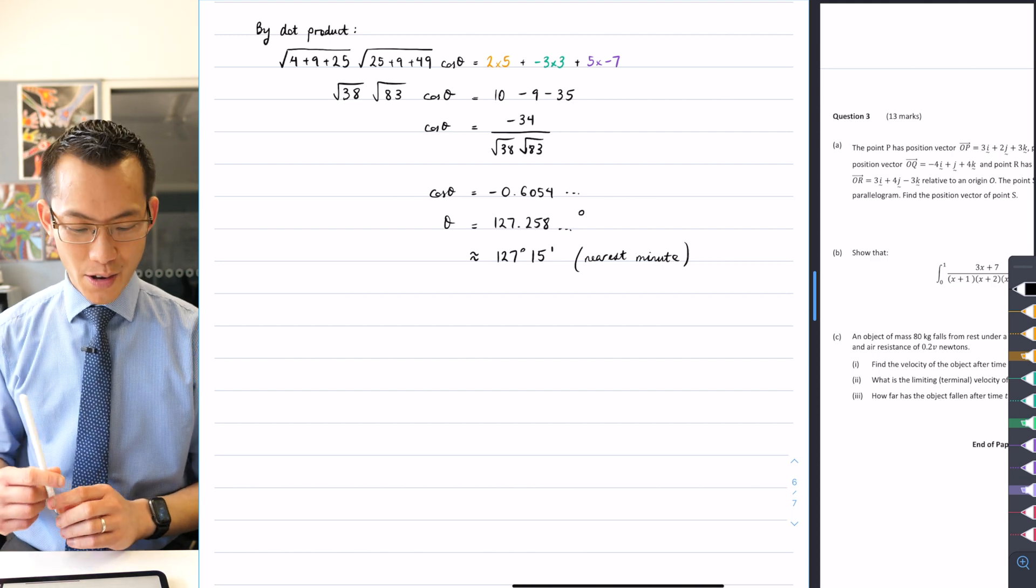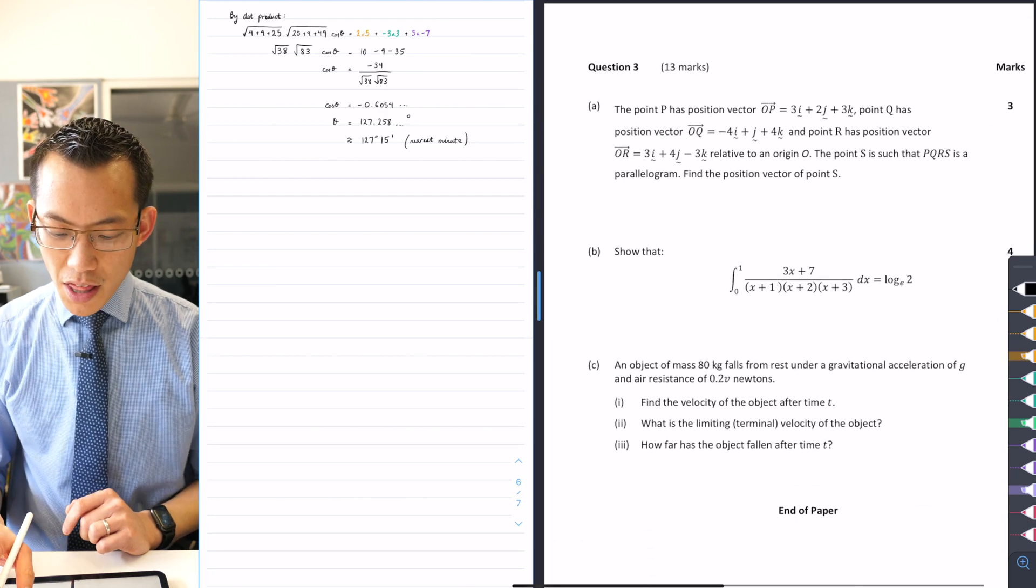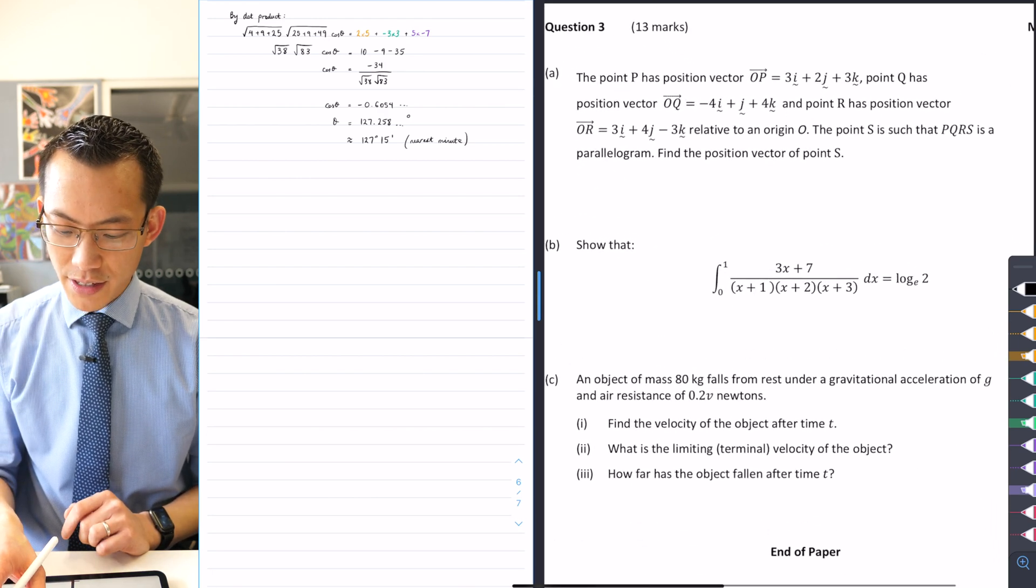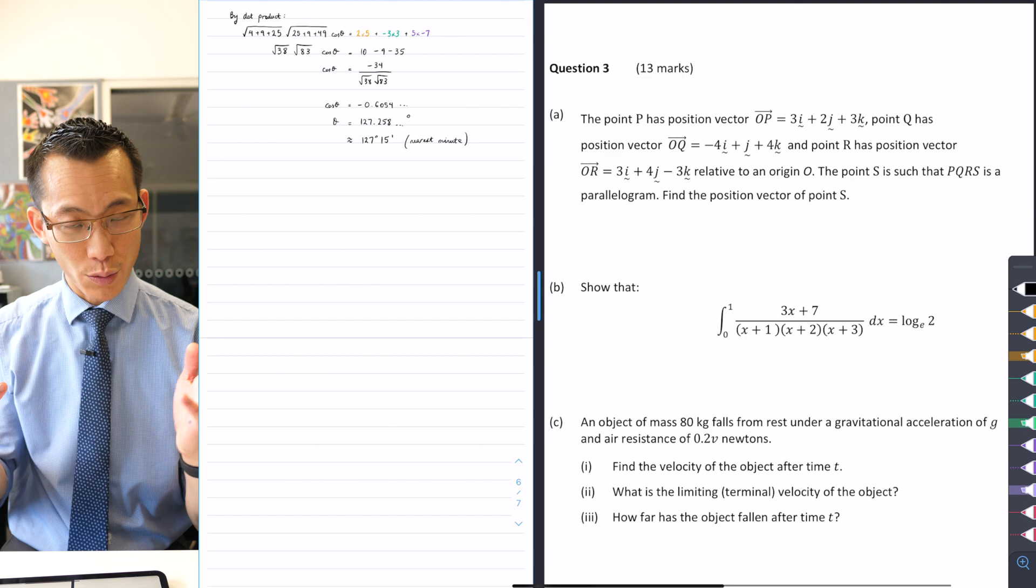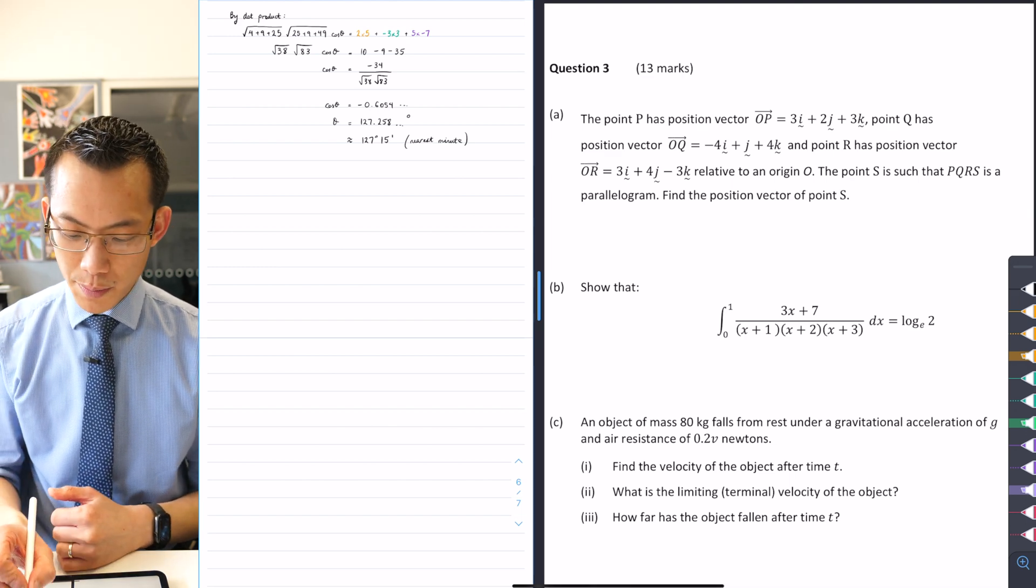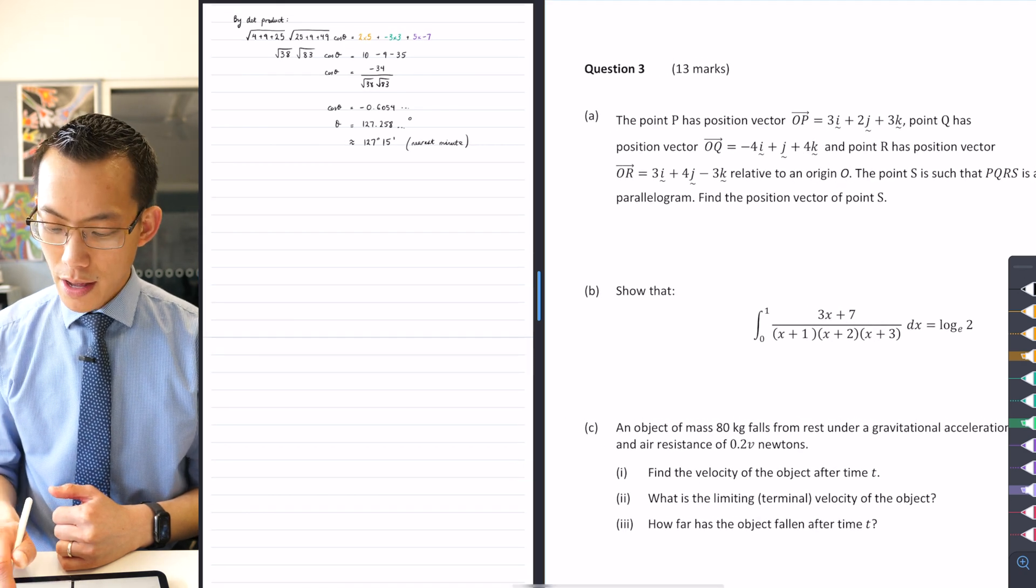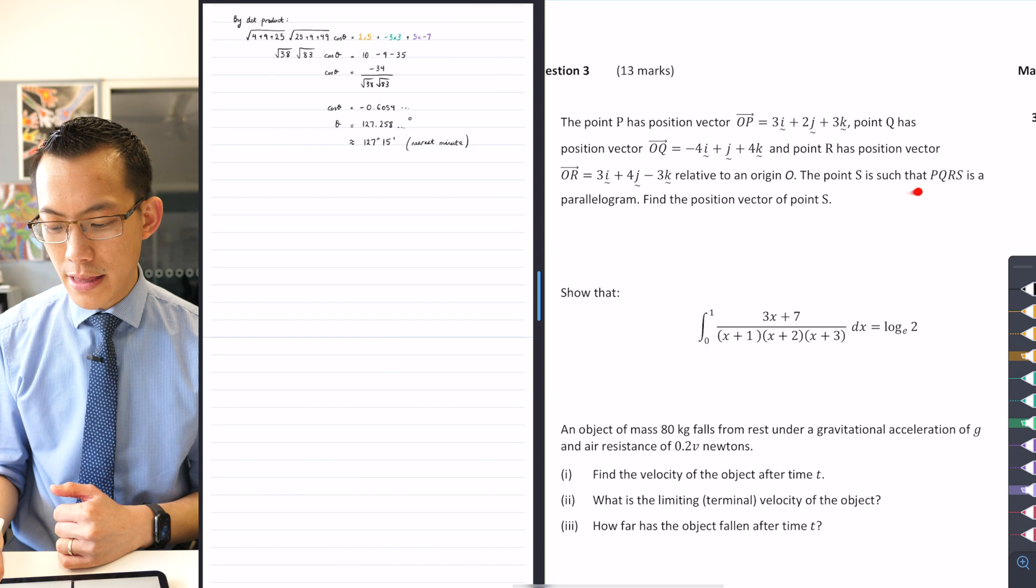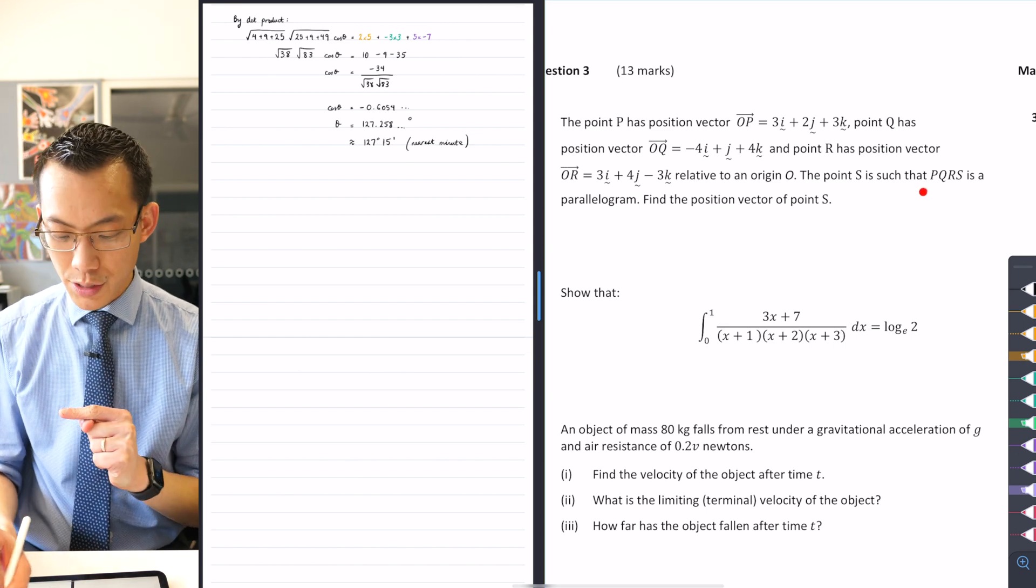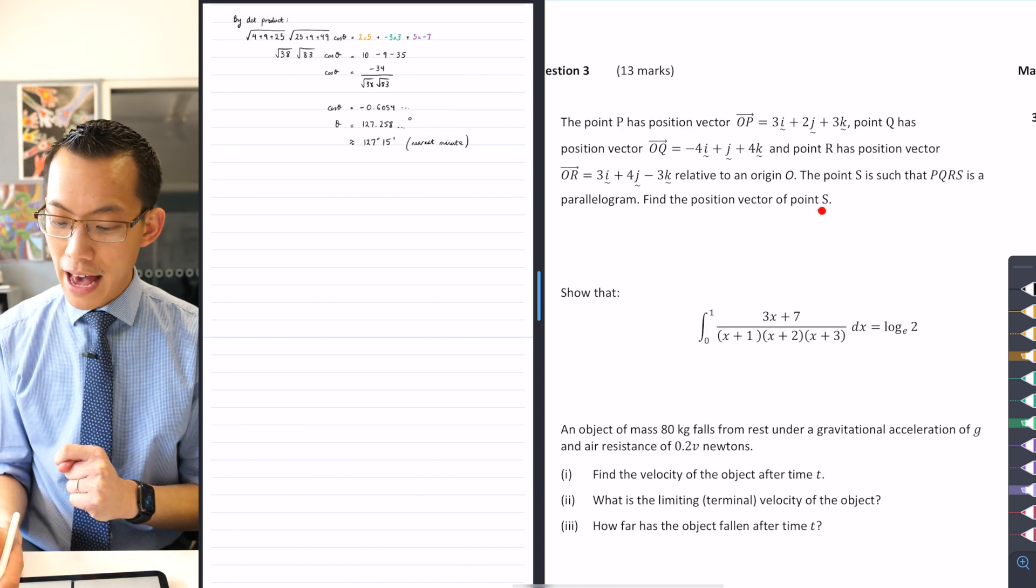Alright, we are on the home stretch, so here comes question three. The point P has position vector OP, point Q has its position vector, point R has its position vector relative to an origin O. Then they say there's some point S that makes PQRS a parallelogram. Find the position vector of that point S.